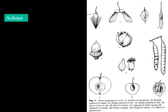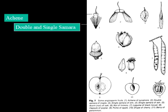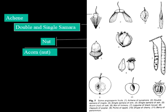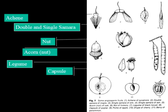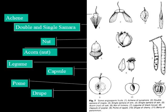Fruit types. Achenes are a simple dry fruit with a single seed, like a sycamore. Double and single samaras are the wing seeds you see from maple trees and ash. Nuts are from hickory, and acorns from an oak tree. Legume seeds are from a black locust tree. Capsule seeds are from poplar. Pome is an apple. Drupe is a fruit like a cherry. And the berry type of seed is from a persimmon. These are all terms that you will see in your Tree Finder booklet.